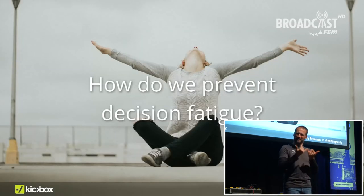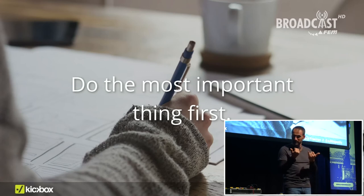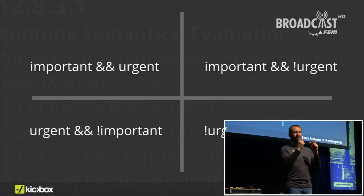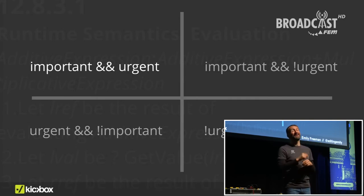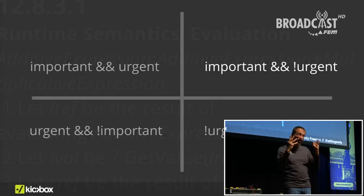So how do we prevent decision fatigue? Do the most important thing first — you are at your best first thing in the morning, with enough energy and focus to tackle whatever is in front of you. There's a grid system I like to use: if something is important and urgent, do that first thing. If something's important but not urgent, keep it on your backlog. If something is urgent but not important, try to delegate it. Items that are neither urgent nor important should probably be dropped altogether — these are the things I would encourage you to say no to.